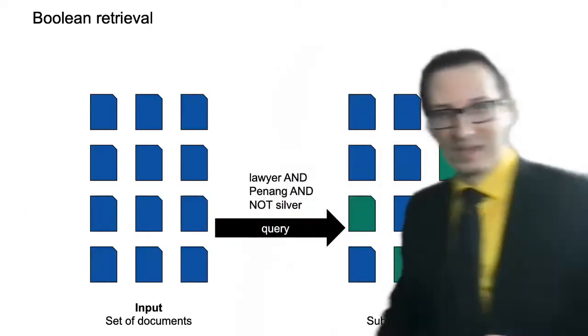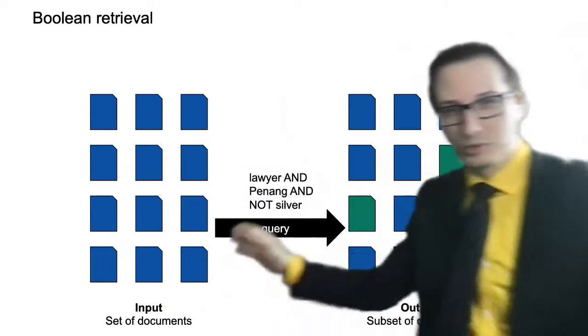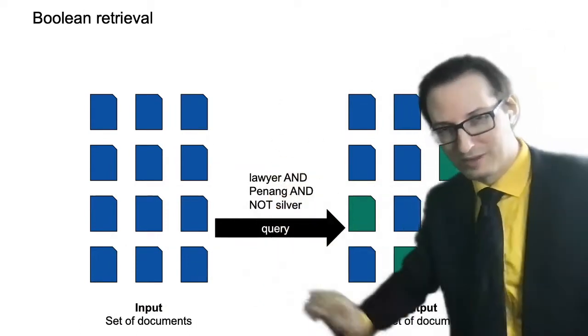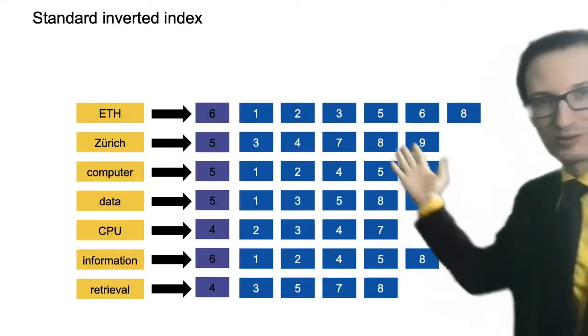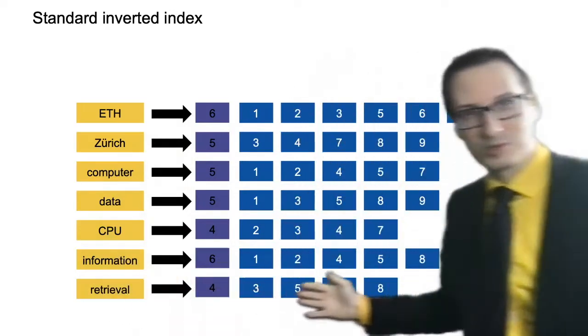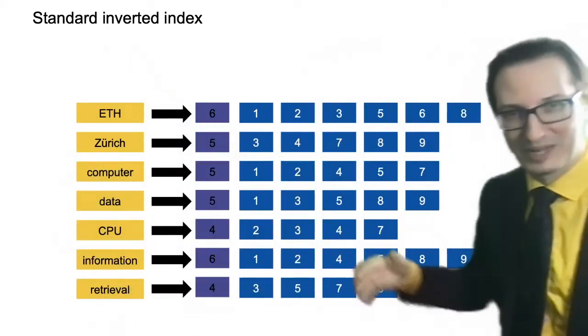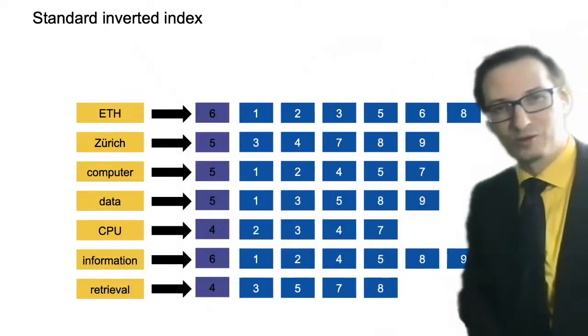So what have we seen so far? We've looked into Boolean retrieval. We have a set of documents as input. We are able to process queries that look like this with AND or AND NOT in any conjunction of that. And we output a subset of the documents. We've seen that an efficient way of doing that is to build a standard inverted index. Standard, because this is the vanilla version, but as we saw, it can be extended with many bells and whistles, depending on what you're doing.